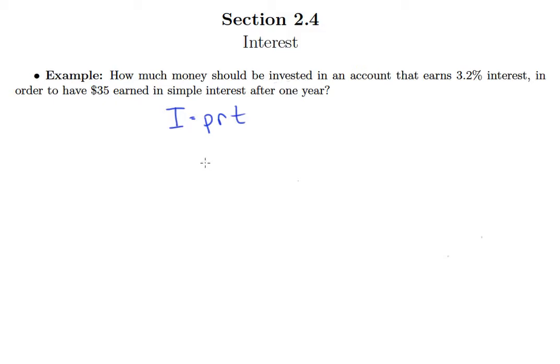And so let's understand first of all what are they asking us to find here. It says how much money should be invested. Remember the amount invested is our principal, so P is our unknown that we're trying to find.